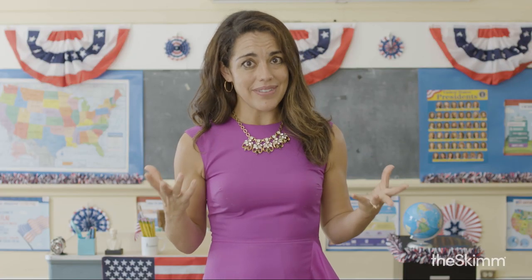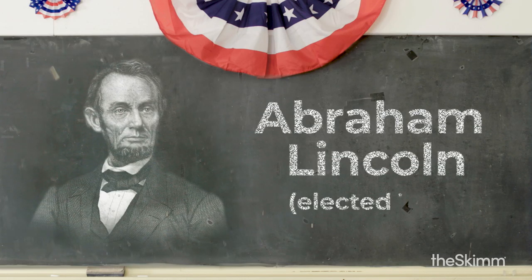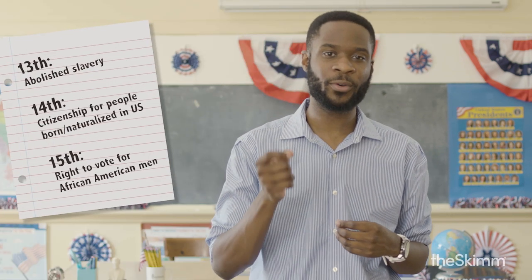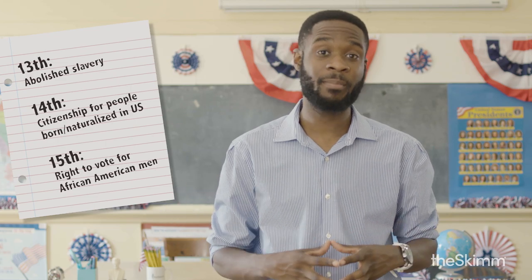The Democratic Party was having its issues too. Southern Democrats were in favor of an expansion of slavery, while Northern Democrats felt that new states should make their own decision. That disagreement allowed Lincoln and the Republican Party to take the election in 1860. The Republican Party became synonymous with social justice, eventually passing the 13th, 14th, and 15th Amendments.